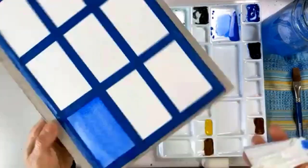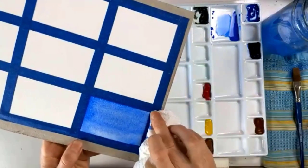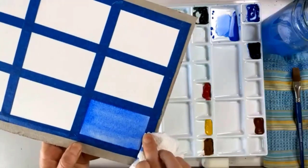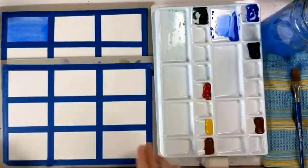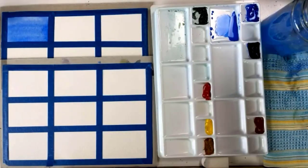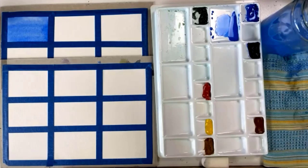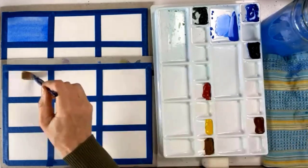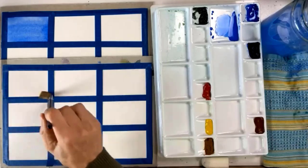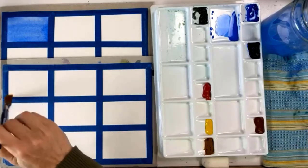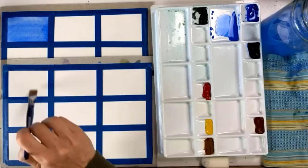So you can go ahead and start your flat wash. I'm going to work along with you. I have another paper set up so I'll work along with you. Just clean your brush really well. Then you're going to wet your paper. Make sure you wet it back and forth every which way. And hold it up to the light to make sure you haven't missed any spots.